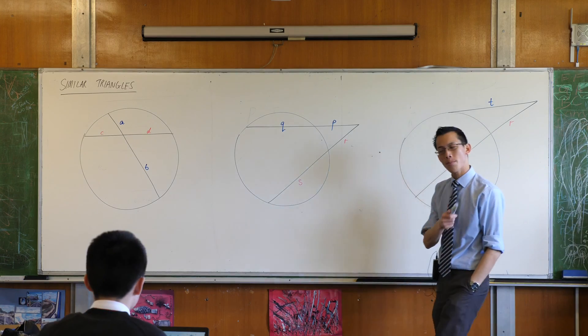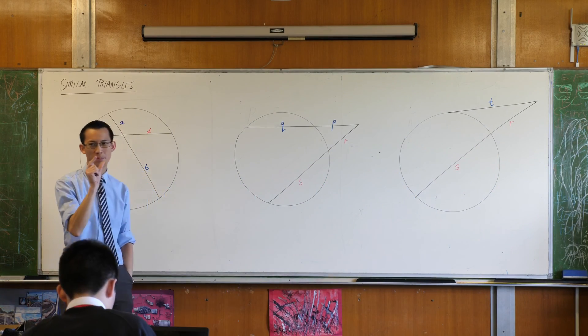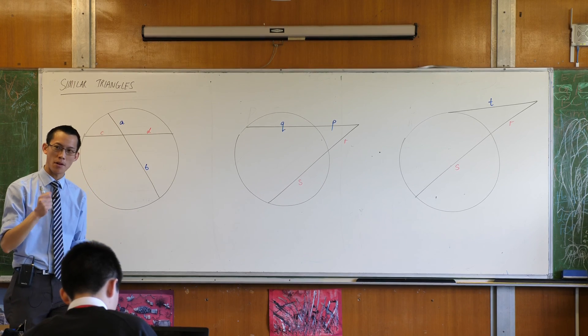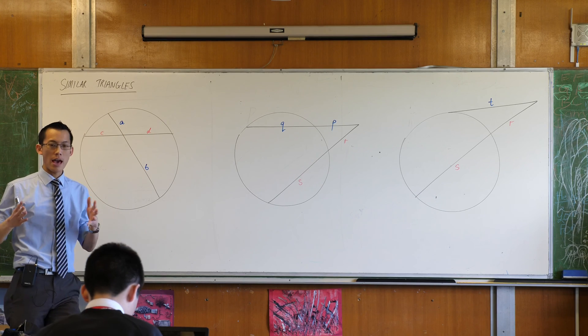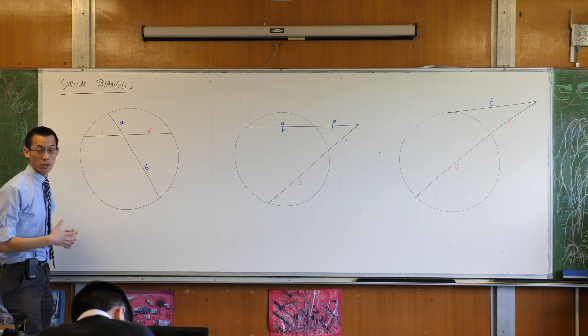Do you remember when we were proving our property this morning? What was the property again? What was it called? What's the short form? This is the angle of the alternate segment, right? When we proved that, do you remember I said you had to make a construction and whenever you're making constructions you don't know where to go, a good idea is to put the center on.